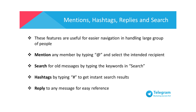You can save time when searching for old messages by typing keywords in search, and the keywords will be highlighted in the messages. Hashtags can be used to get instant search results just by typing the pound sign before the word and it becomes clickable. You may also select to reply to any message so that everyone knows which message you're referring to, and you can quickly go to the original message by tapping on the quote.